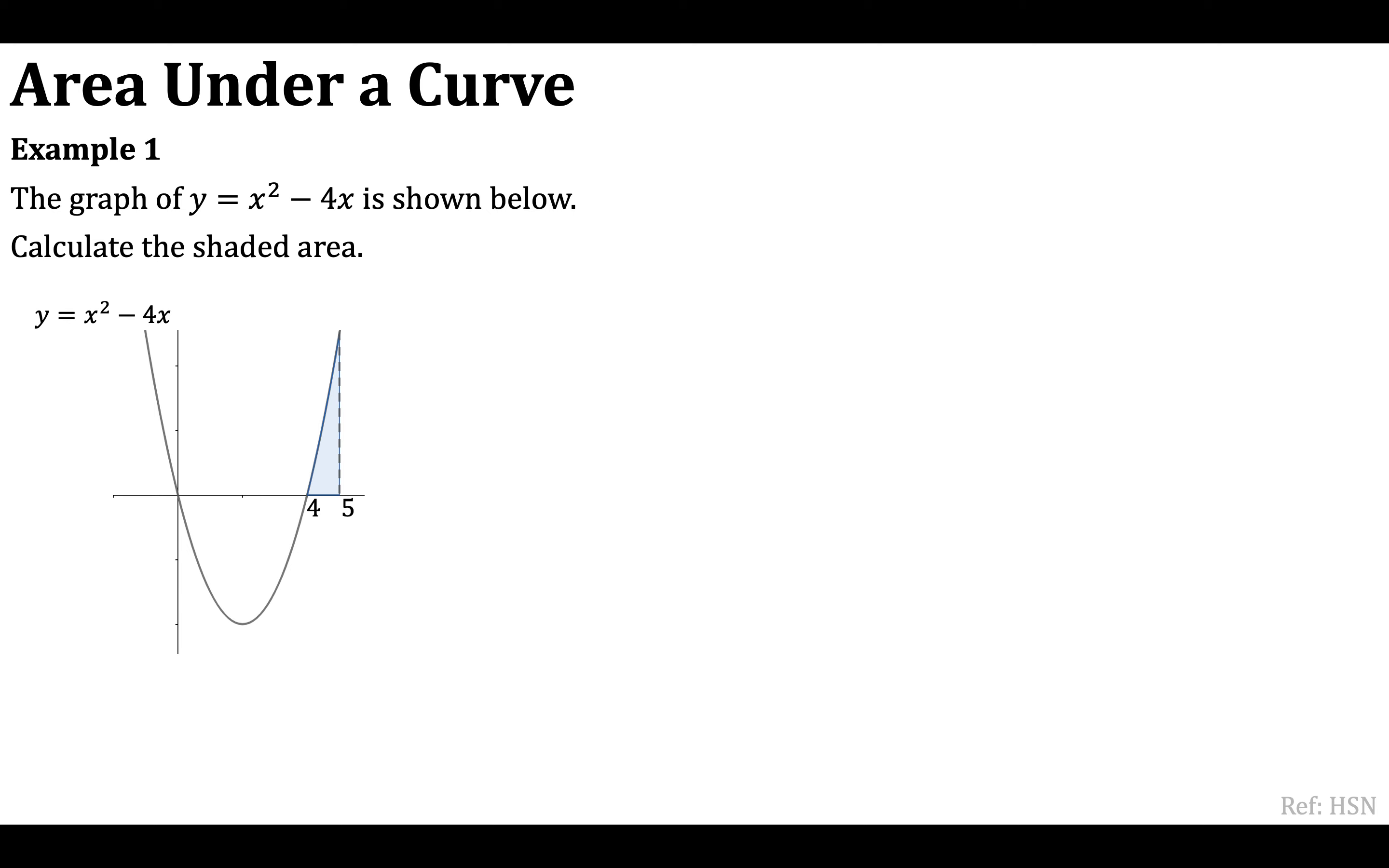Let's take a look at an example here. We've got the graph of y equals x squared minus 4x, as shown below, and we want to calculate the shaded area. Okay, so you can see that the shaded area lies between 4 and 5 on the x-axis. So when I'm setting up my integration here, I know that that's going to be my limits. So I've got the integral between 4 and 5 of the curve that I'm giving, x squared minus 4x, with respect to x.